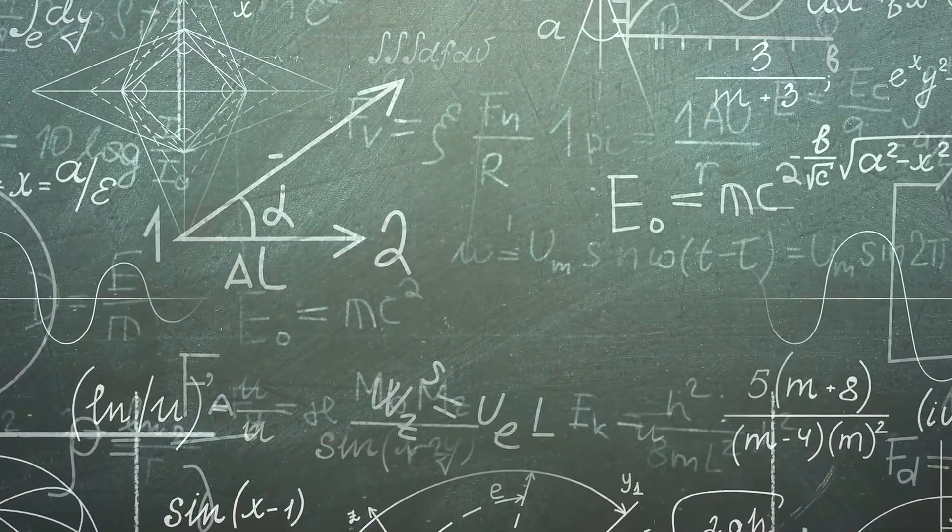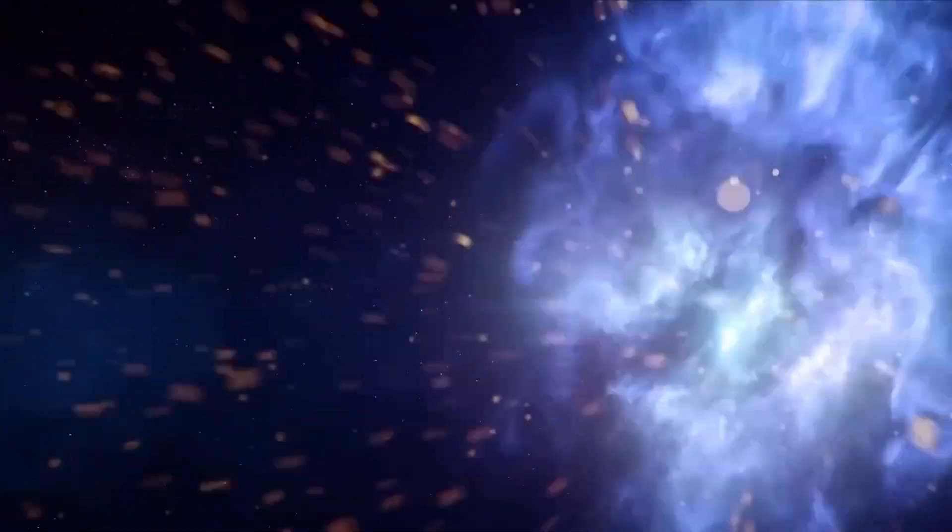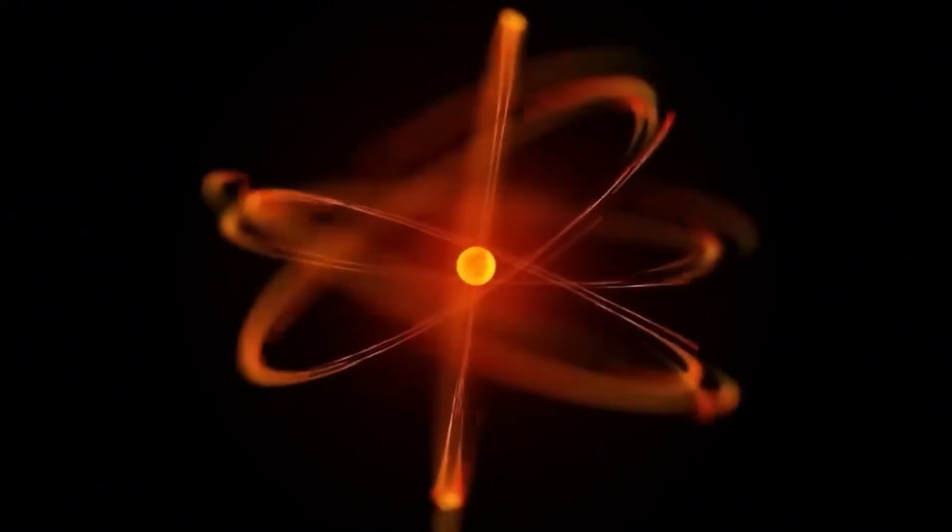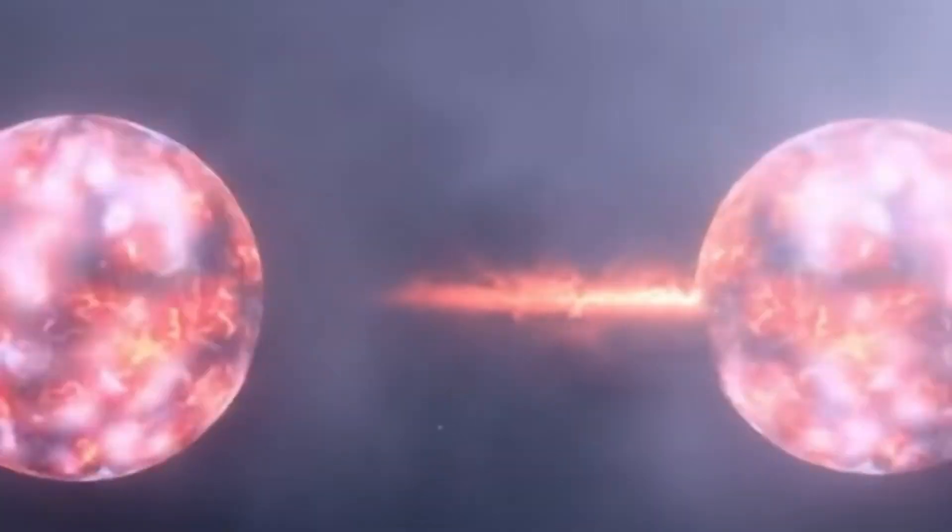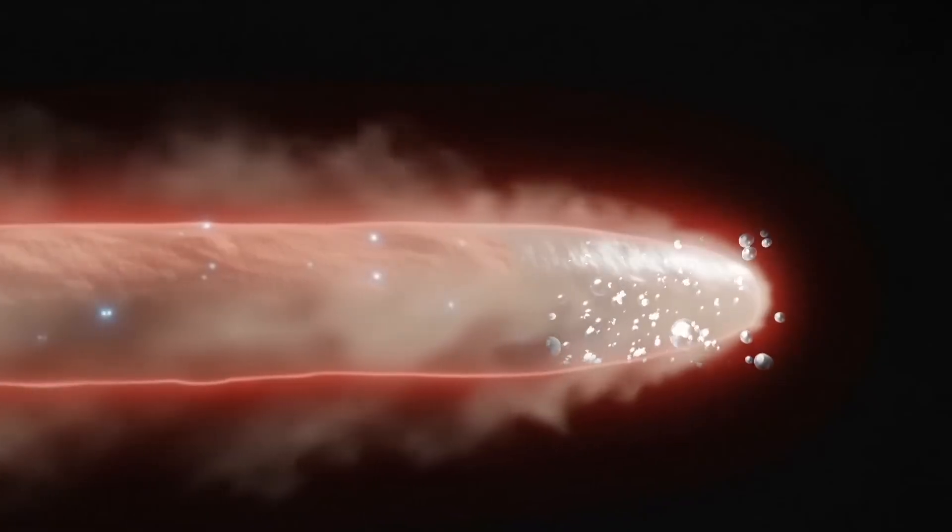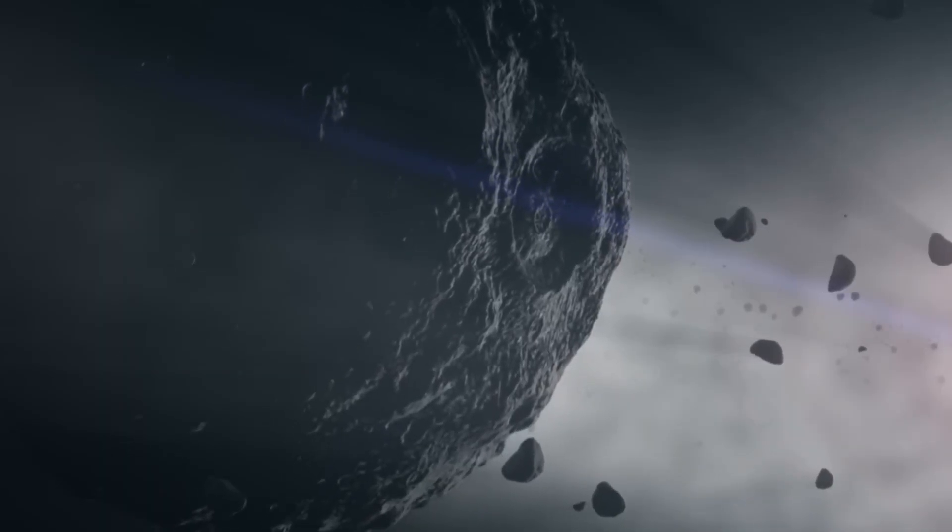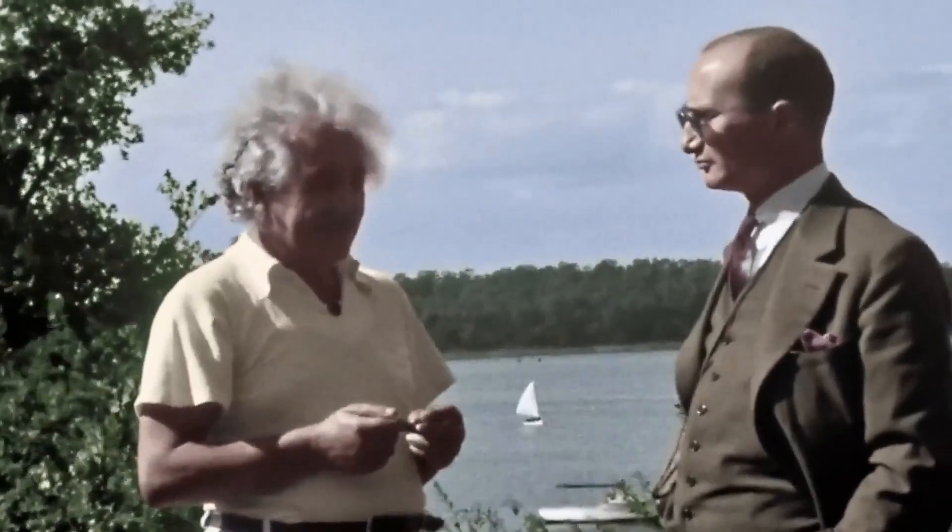But then one small, seemingly harmless detail brought the entire picture crashing down: the light emitted by hot objects. When you heat a bar of iron, you see it glow first red, then orange, and finally, a brilliant white. That seems normal. But when physicists tried to calculate the energy it was emitting, they found something bizarre. According to classical equations, the light at short wavelengths like ultraviolet rays should carry infinite energy. It was absurd. Experiments said no, but the math fell silent.